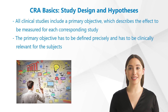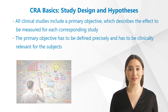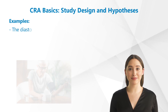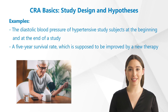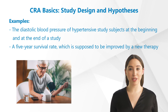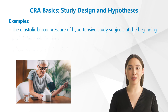Before starting the study, the primary objective has to be defined precisely and has to be clinically relevant for the subjects. Examples of a primary objective are the diastolic blood pressure of hypertensive study subjects at the beginning and at the end of a study, or a five-year survival rate which is supposed to be improved by a new therapy.